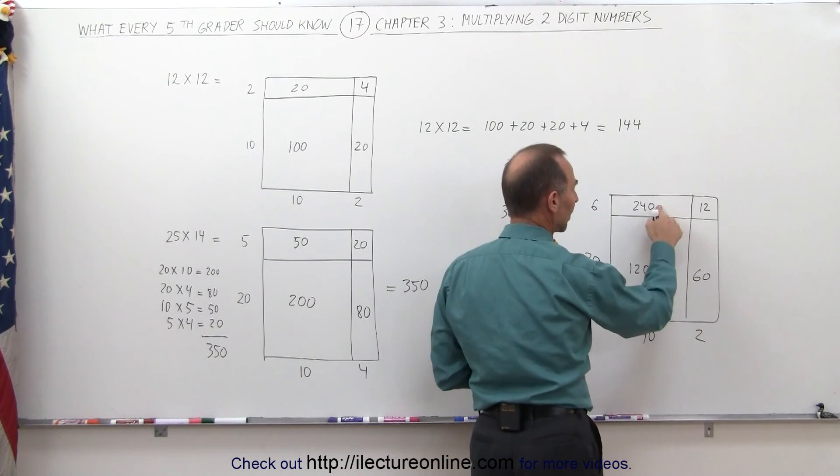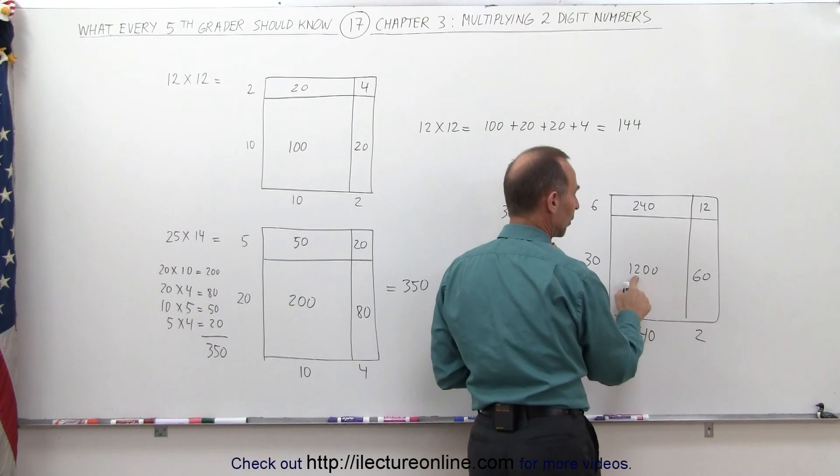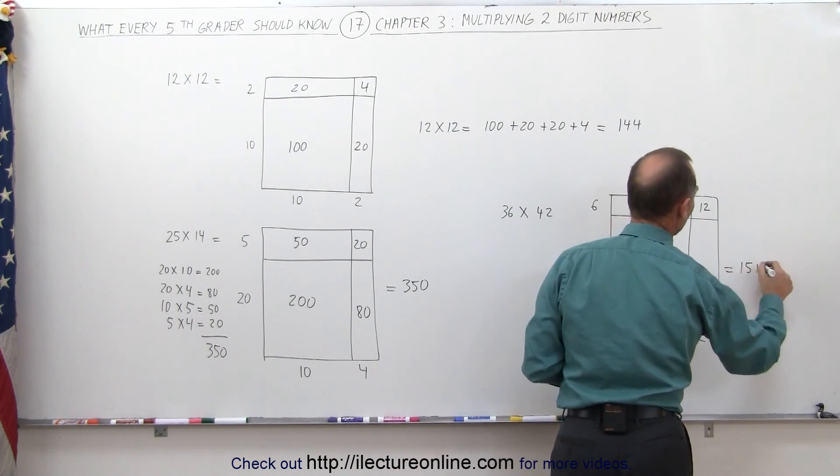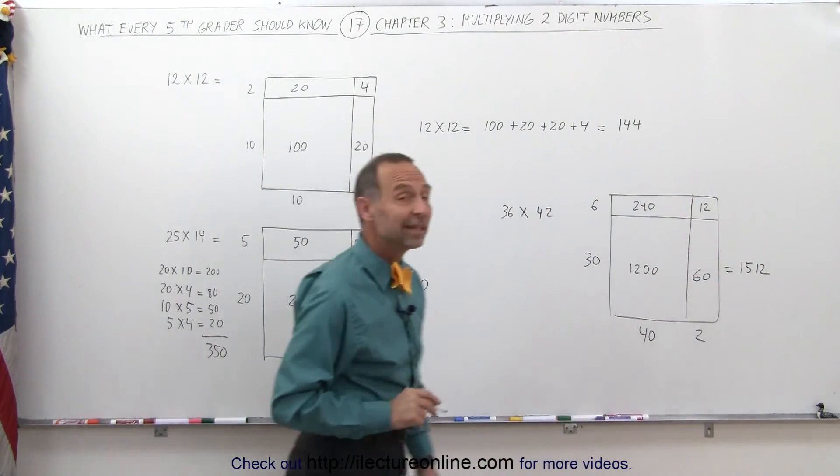Now 240 plus 60, that's 300. Add that to 1200. 1200 plus 300 is 1500. Add that to 12. You get 1500 and 12. Pretty neat technique, isn't it? Go ahead and give it a try.